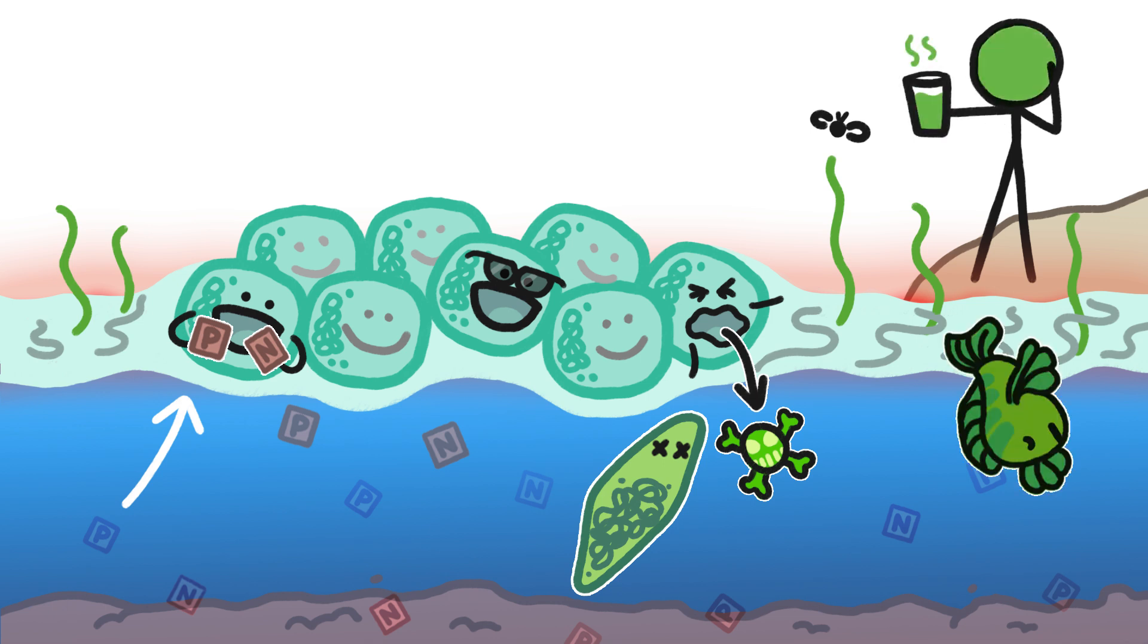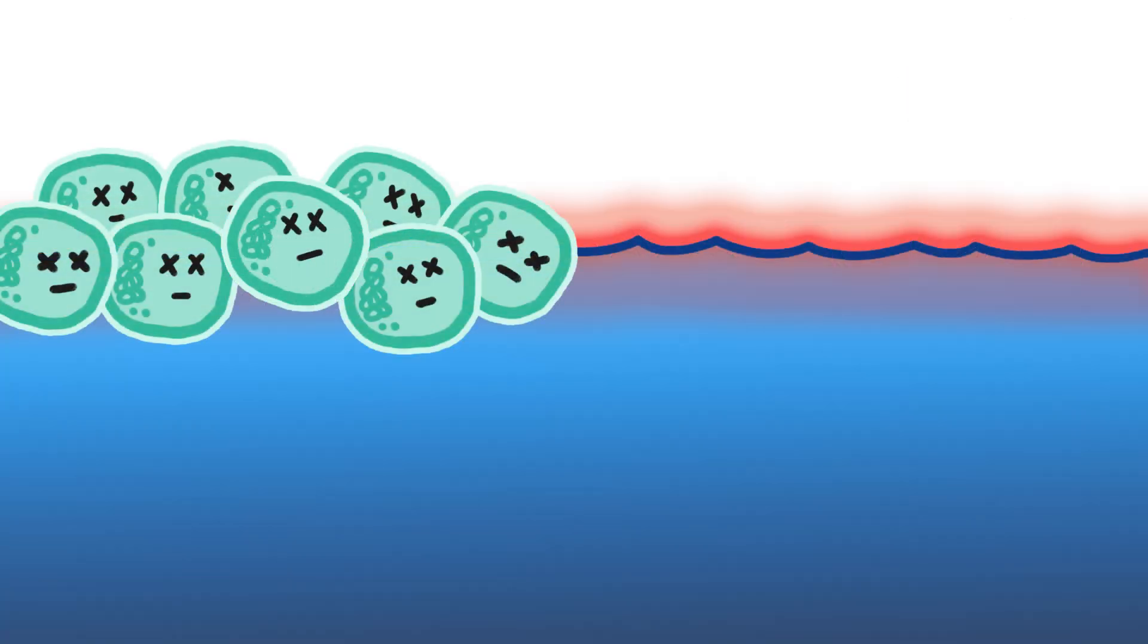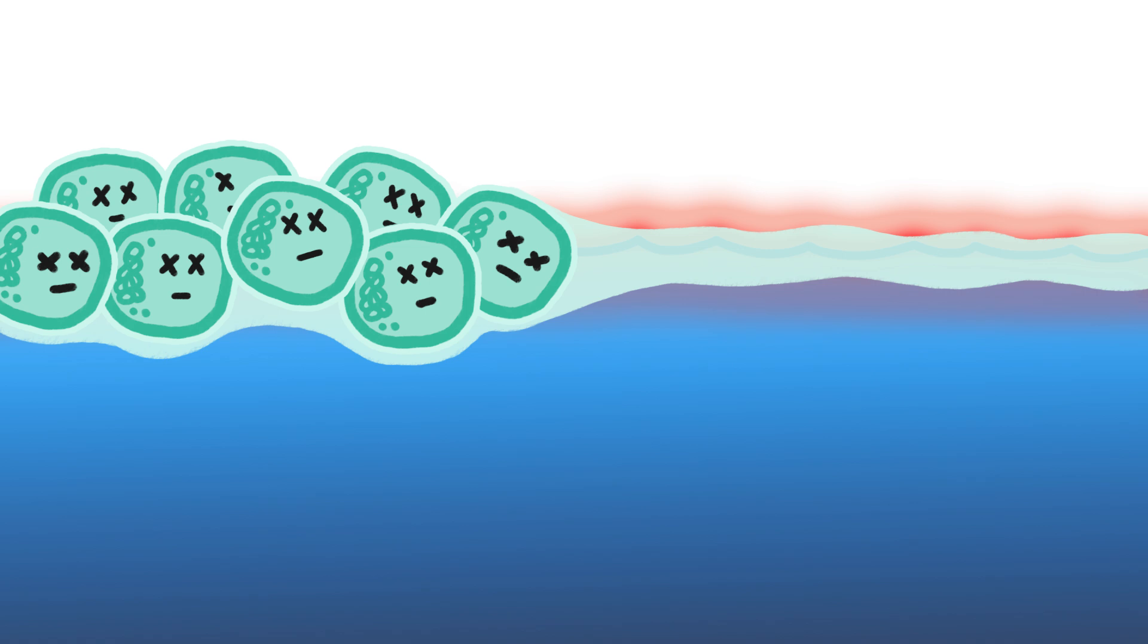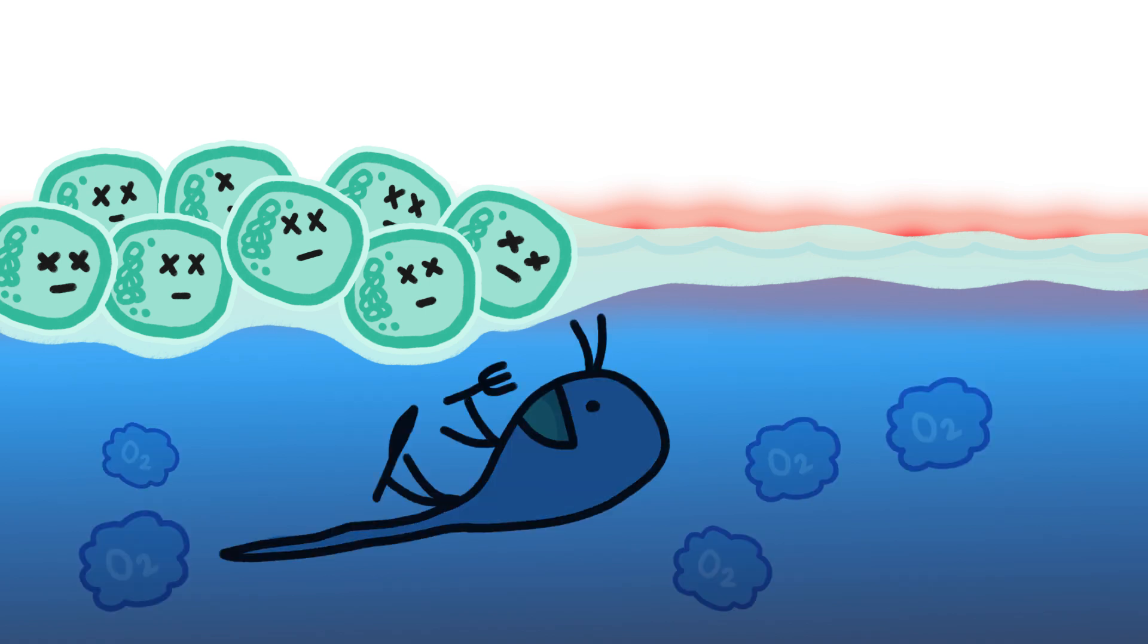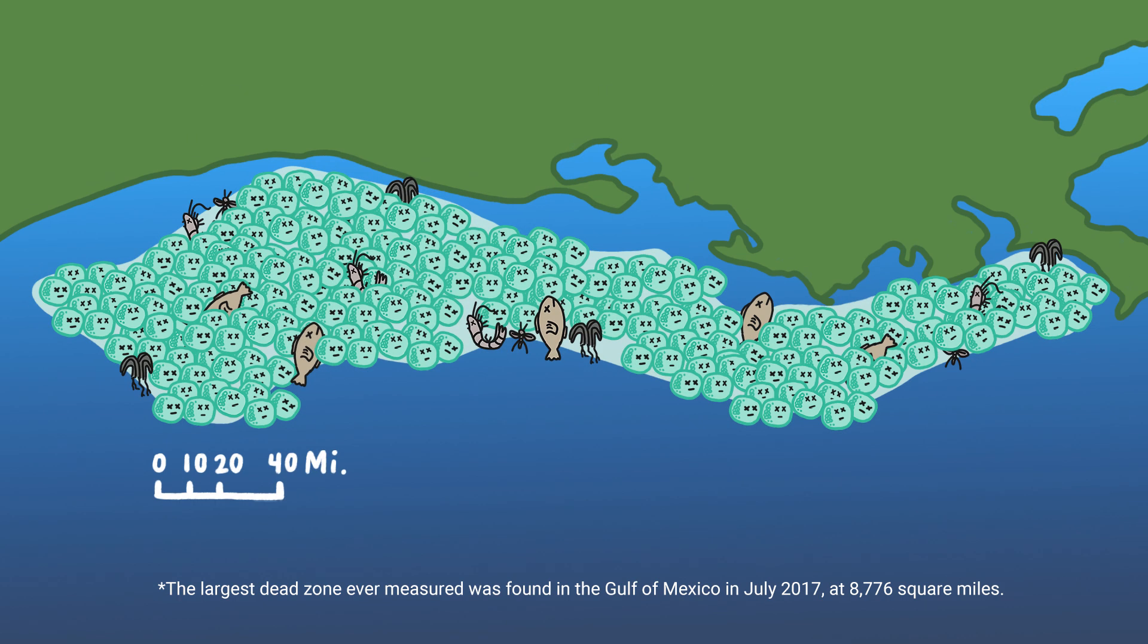And since cyanobacteria live short lives and die in large groups, floating mats of their dead bodies serve as food for oxygen-breathing decomposers, who temporarily use up all of the available oxygen in the water, killing fish, shrimp, insects, and plants in sometimes dangerously massive dead zones.